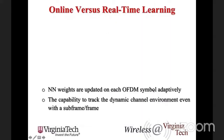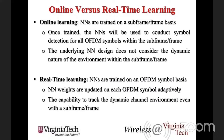This is online learning: the neural network is trained on a per-subframe basis using the training symbols within that one millisecond subframe. Once trained, it performs symbol detection for all OFDM data symbols within that subframe and does not change across OFDM symbols. We assume the subframe has consistent features across all its OFDM symbols. However, for high-speed communication, the channel can change even on an OFDM-symbol basis, motivating real-time machine learning.